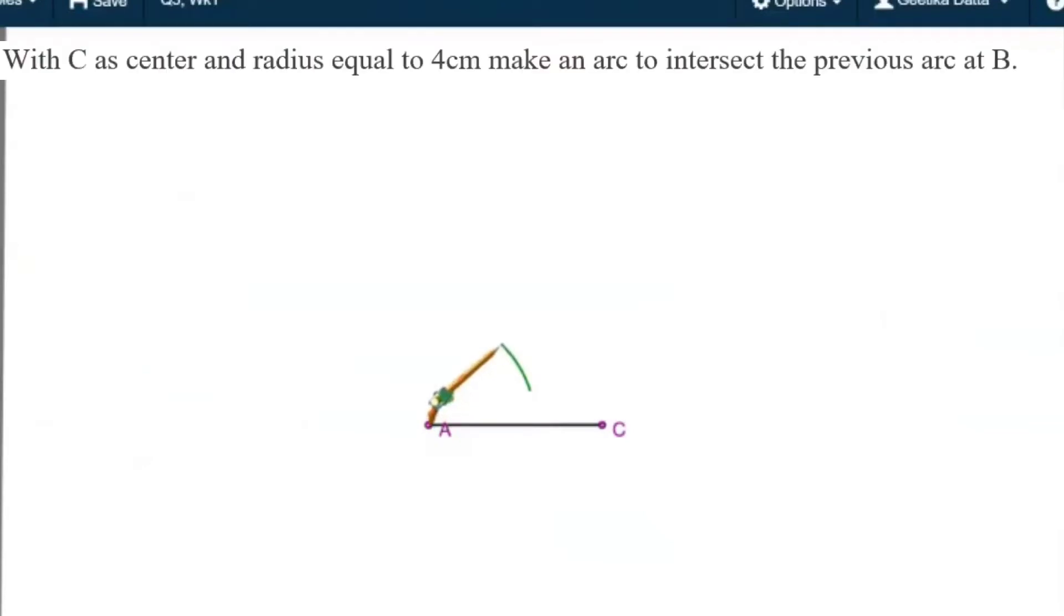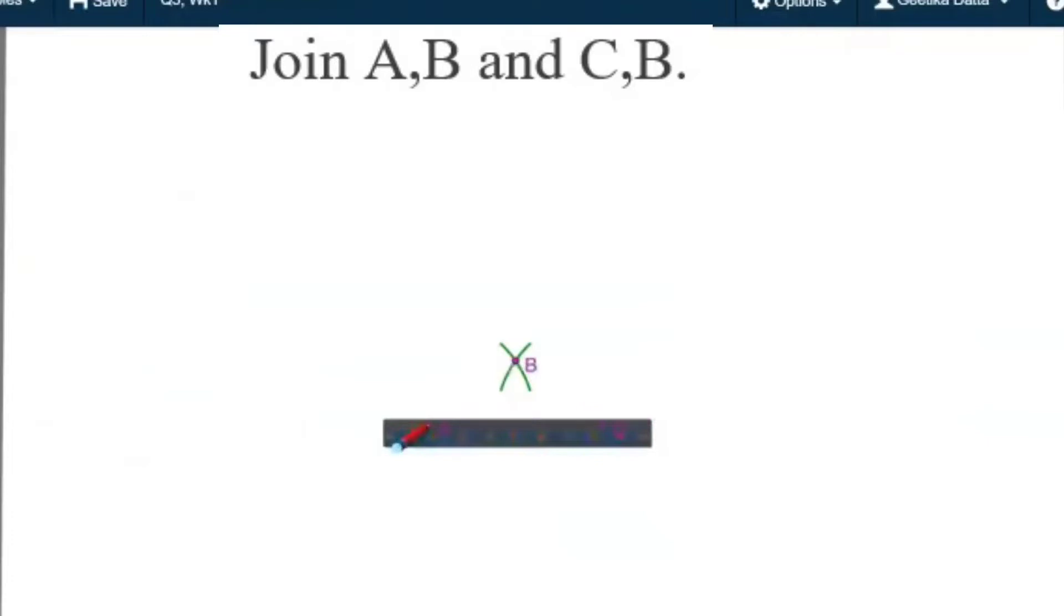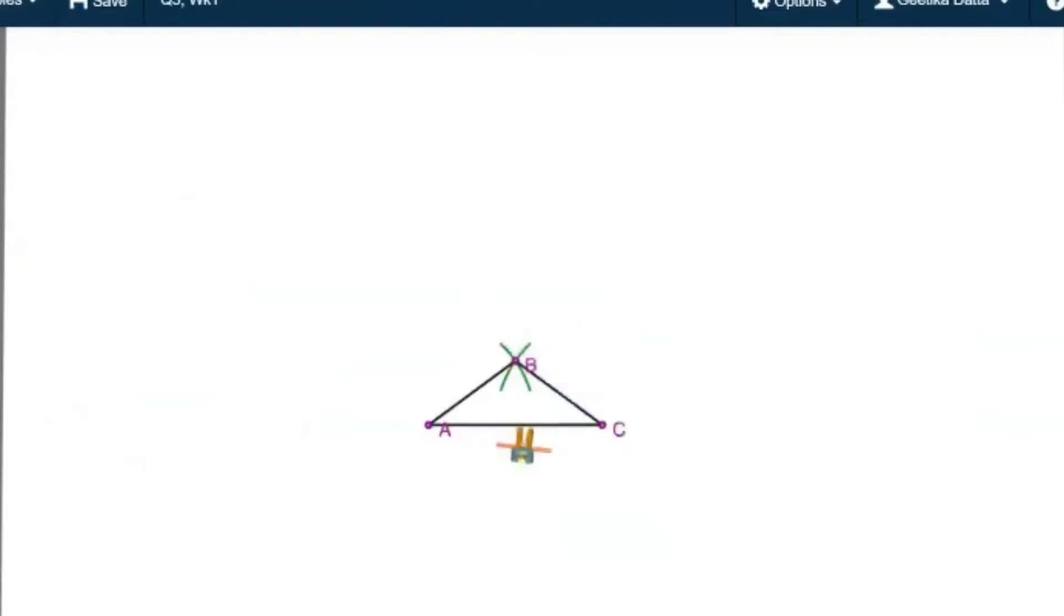So this is the first arc made from A, taking the radius as 4 centimeters. Then with C as center and the radius again equal to 4 centimeters, I make another arc to intersect the previous arc at point B. I join AB and I join BC. So the top portion of the quadrilateral ABCD is made.